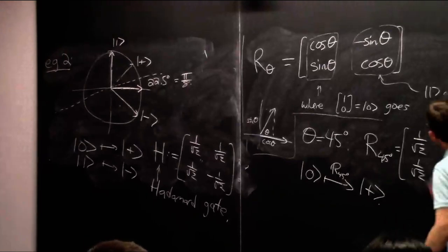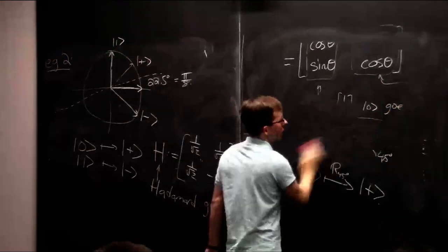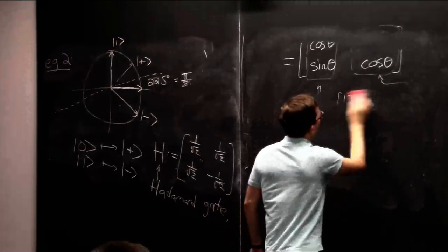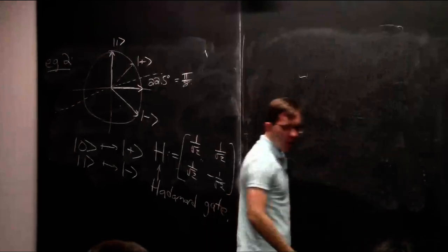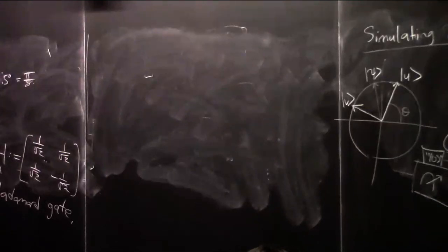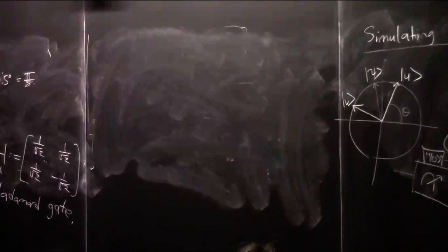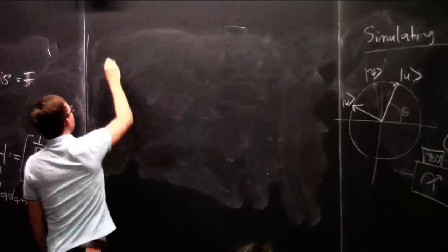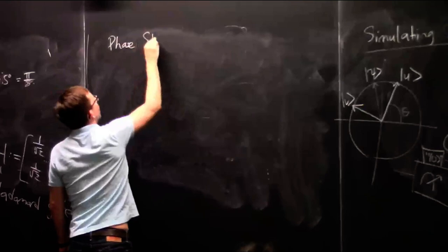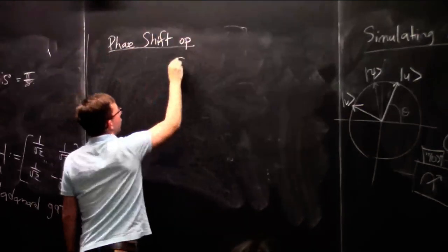I said you can do any rotation you want, and also any reflection you want. What else are you allowed to do according to the laws of quantum mechanics? If there were no such thing as quantum amplitudes, which we like to pretend, that would be it. But there are quantum amplitudes, so in fact you can do even more things. I'll give you an example: this is called the phase shift operation. The matrix which defines it is: 1, 0, 0, i. It's most commonly denoted S.